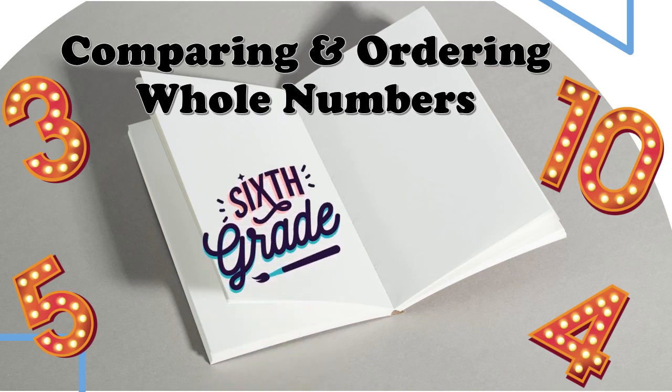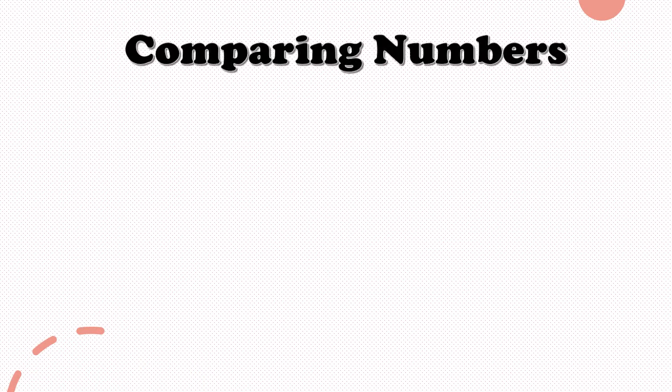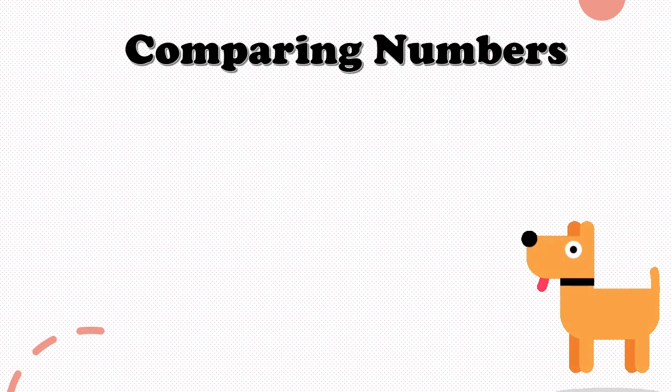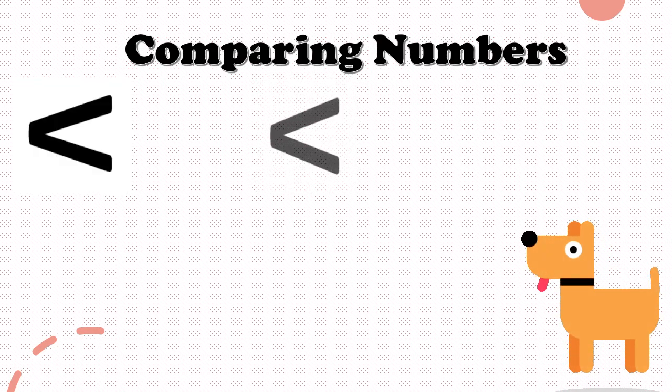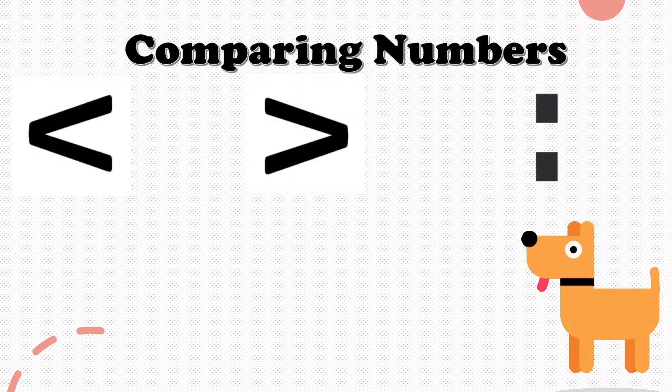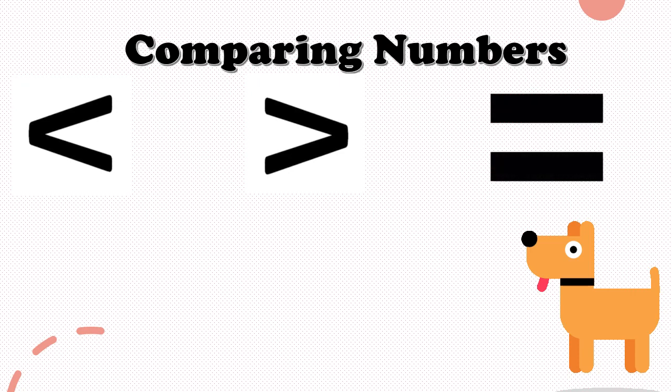Comparing and Ordering Whole Numbers by Miss Devonia Brown. When comparing numbers, we use the greater than, less than, or equal to sign. It is easy to confuse the less than and greater than sign. The opening part of the sign always faces the larger number.